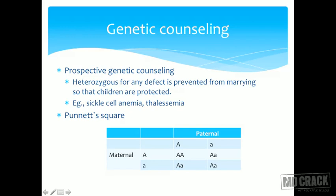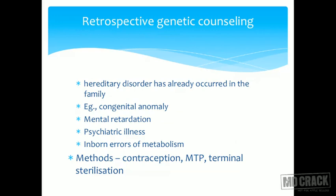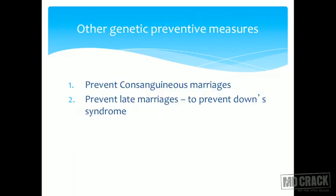Retrospective genetic counseling is done after a child with a genetic defect is already born. It applies when a hereditary disorder has already occurred in the family — such as congenital anomaly, mental retardation, psychiatric illness, or inborn errors of metabolism. Methods available include contraception, medical termination of pregnancy if a subsequent child is proven affected, and terminal sterilization.